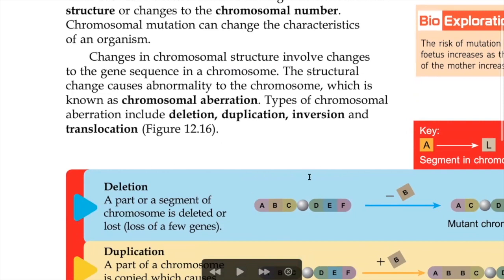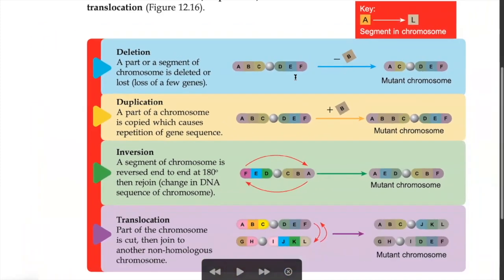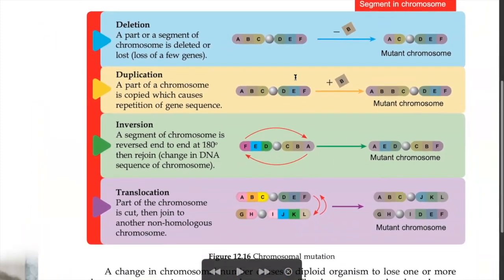Let's look at the examples of chromosomal mutation — there are four. First: deletion. This is a chromosome. When deletion occurs, B is removed — B is gone. So the chromosome is shorter and this is the mutant chromosome. The product of chromosomal mutation is called a mutant. Second: duplication — a duplicate B is added, so the chromosome becomes A, B, B, C.